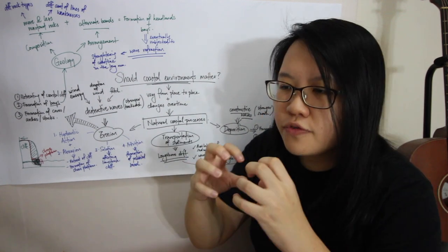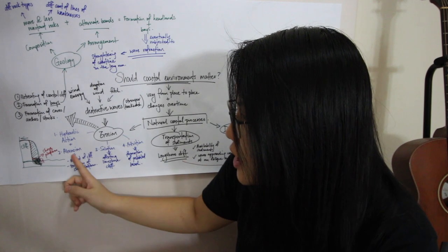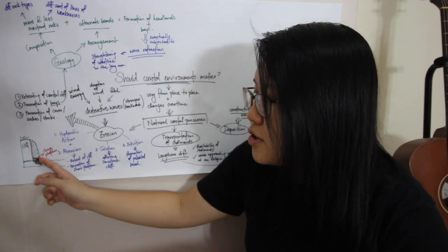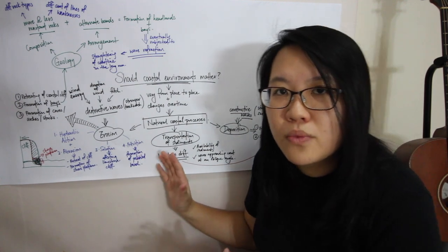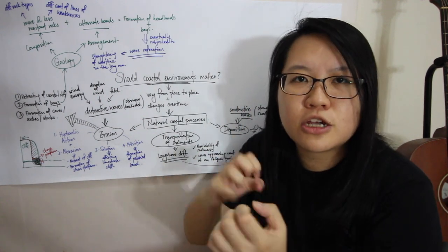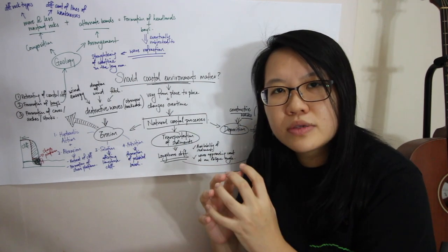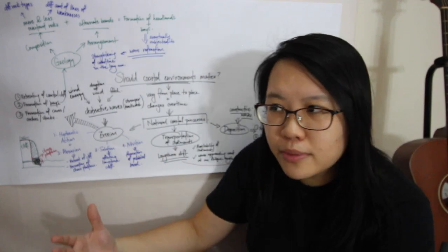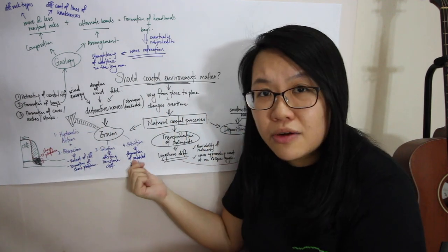Finally we have attrition. This doesn't contribute to the erosion of the cliff itself, but more to the erosion of rock fragments that accumulate at the base of the cliff. After hydraulic action and abrasion have occurred, rock fragments with jagged edges accumulate on the shore platform. When it's high tide, waves carry all those rock fragments and cause them to smash against each other — so the fragments become rounder and smoother, eventually becoming pebbles. That's why in the long run a pebble beach can be formed through the process of attrition.